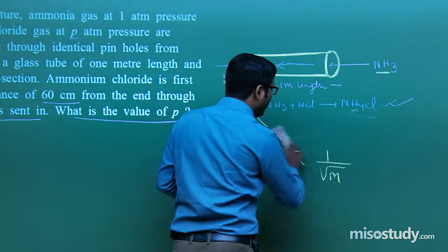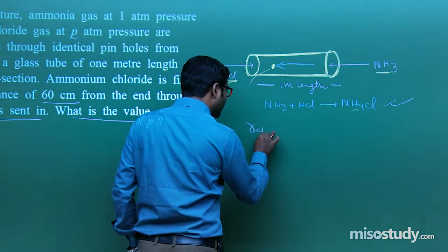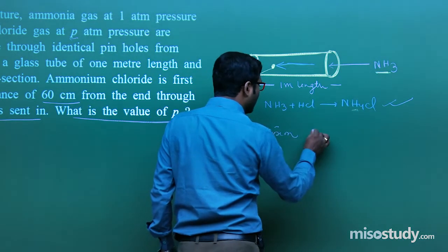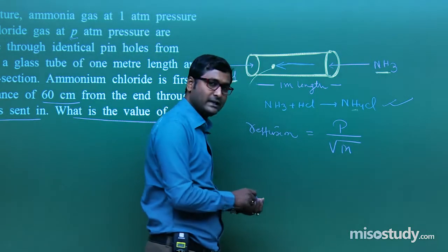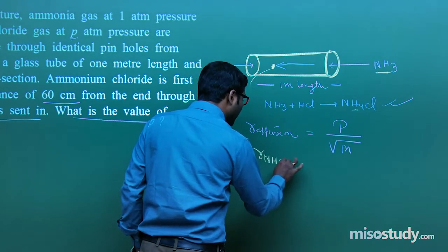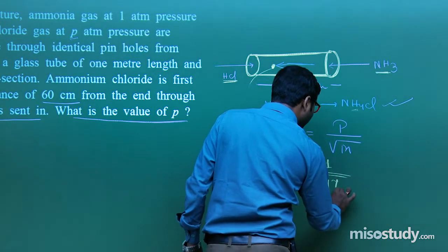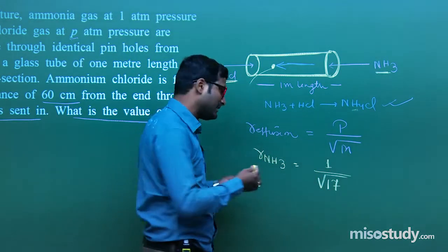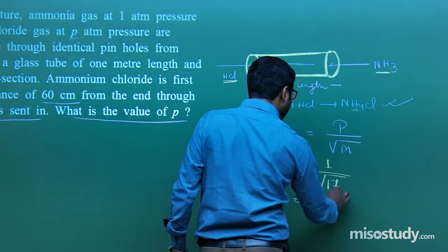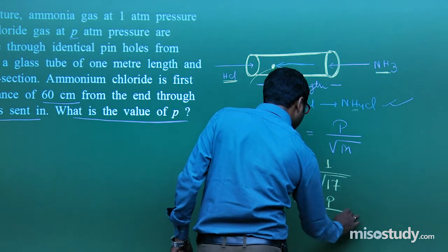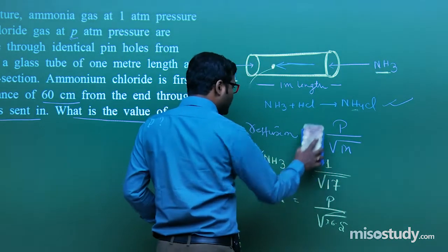Now, looking at what will happen with the involvement of P. The rate of effusion formula — do you remember? Rate of effusion is equal to P upon root M. For NH3, P is 1 atm and the molar mass is 17. For HCl, we write P upon root 36.5. This is the proportionality.